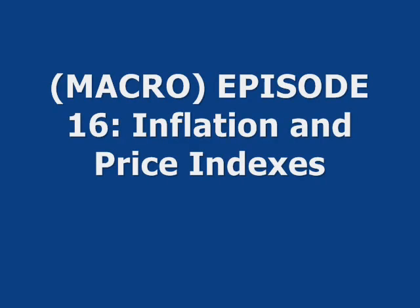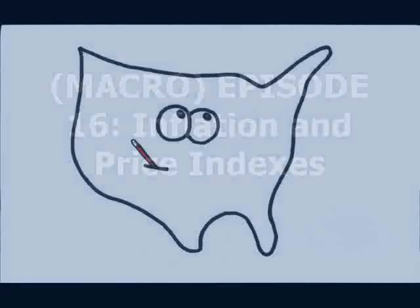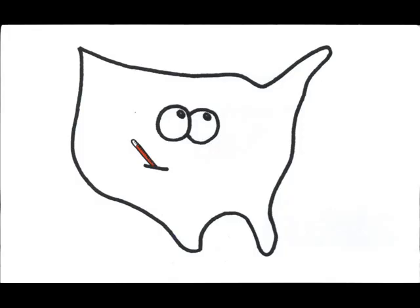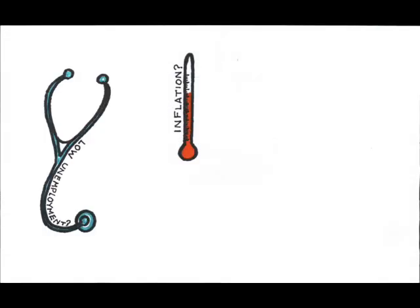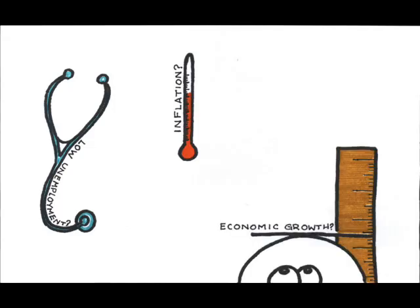There are three macroeconomic goals that we want to keep an eye on to determine the health of any economy: 1. Stable prices. 2. Low unemployment. And 3. High and sustained economic growth.